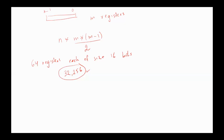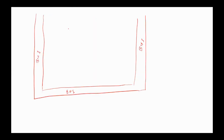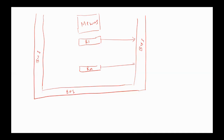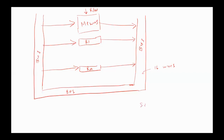A more efficient scheme for transferring information in the system is to use a common bus. According to this approach, we have a common bus, and register 1, register 2, through register n and the memory unit are all connected to the common bus. In the basic computer, the bus size should be equal to any register size and to the size of any memory location — 16 bits, meaning 16 wires in the bus.